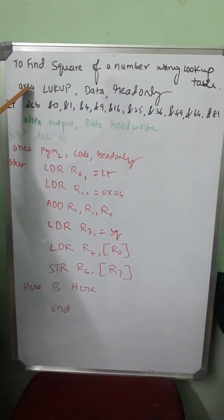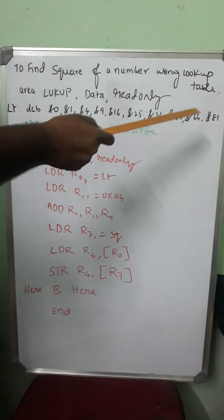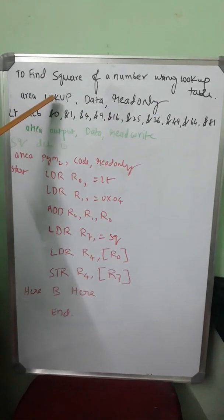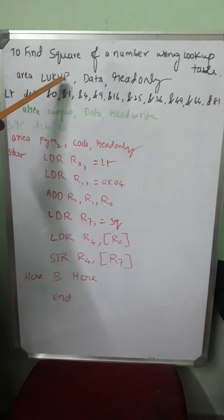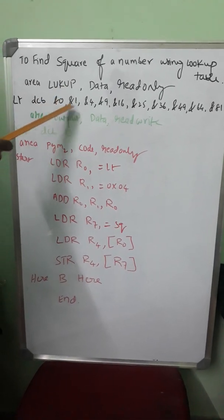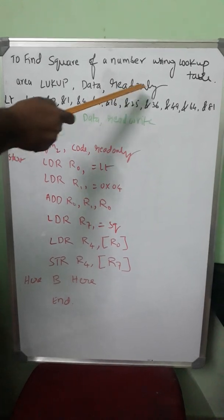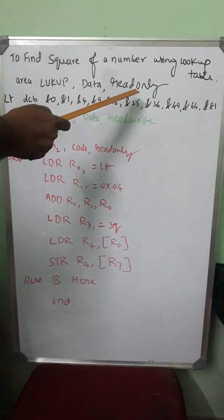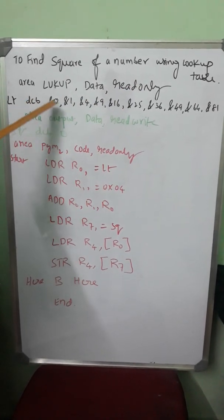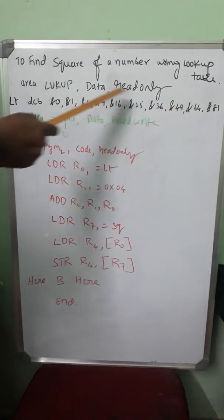AREA is the assembler directive which will provide me a block or chunk of memory. LOOKUP is the user-defined name I have given to the segment of memory. DATA is the kind of information, and READONLY is the kind of memory, which is permanent memory, because the lookup table has to be permanently available to me.